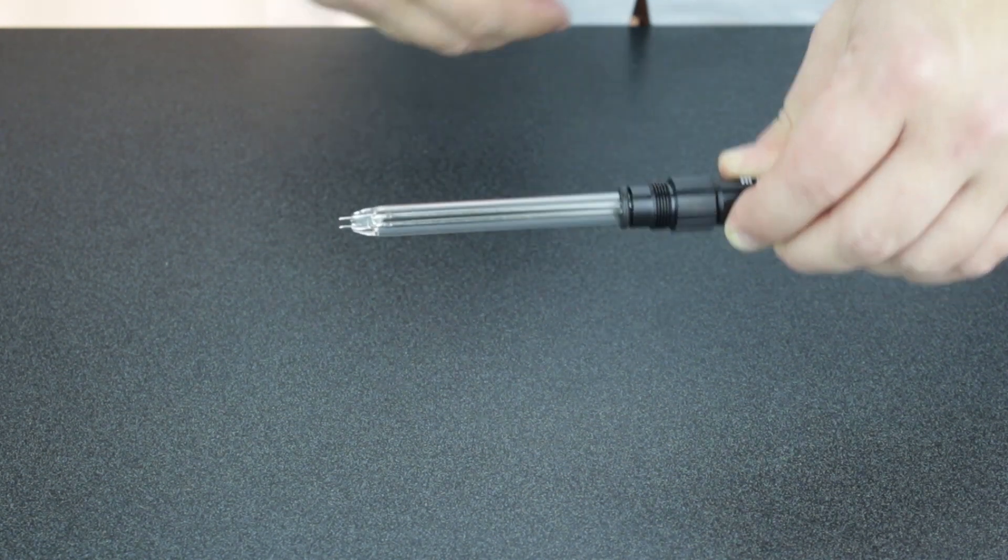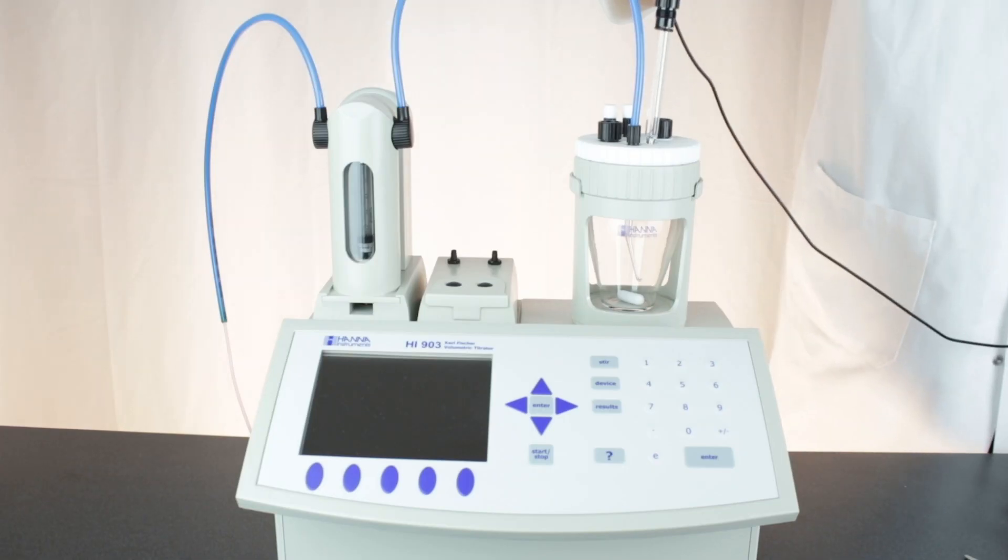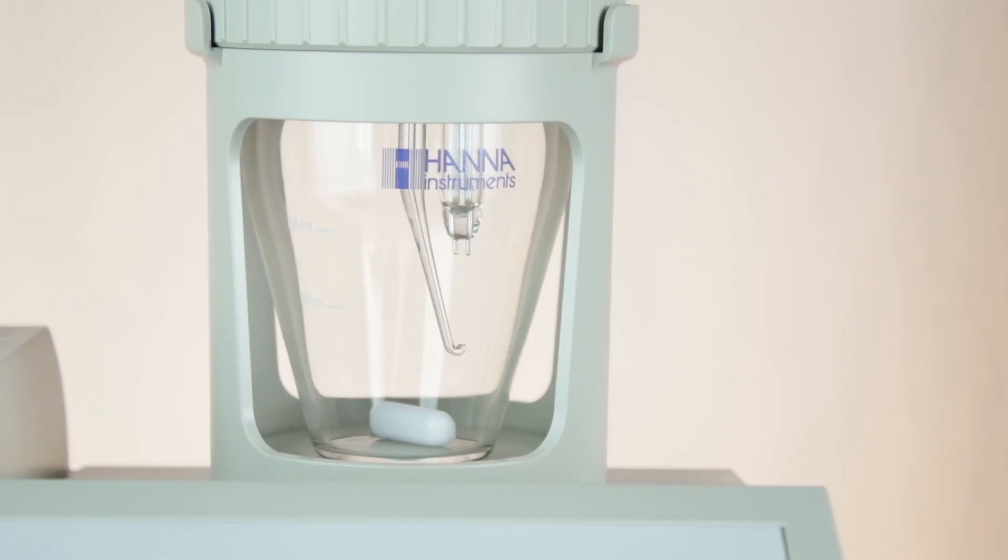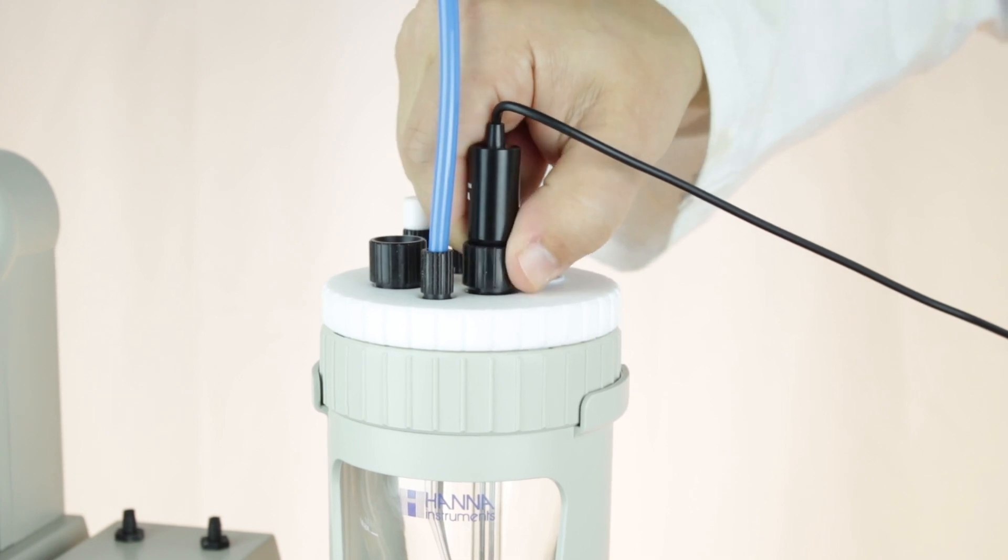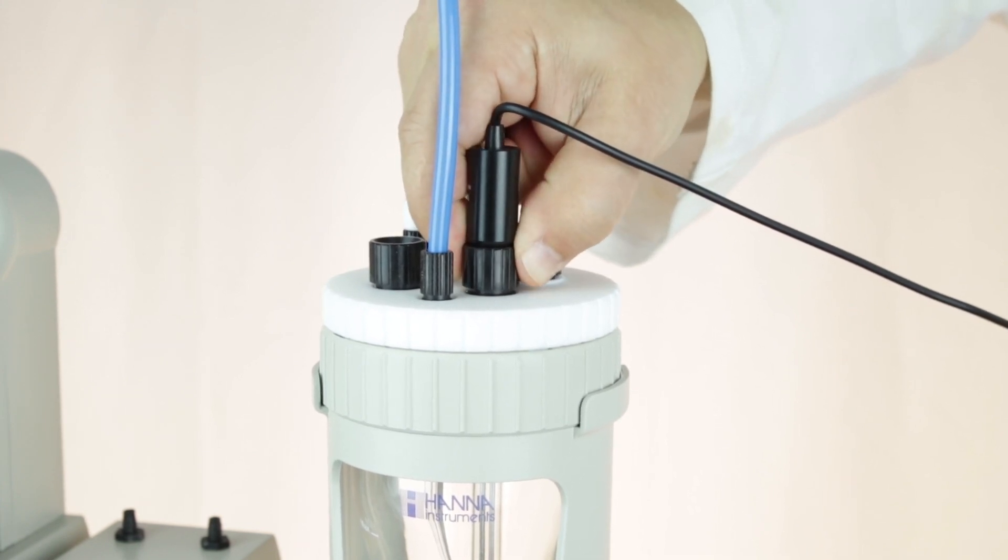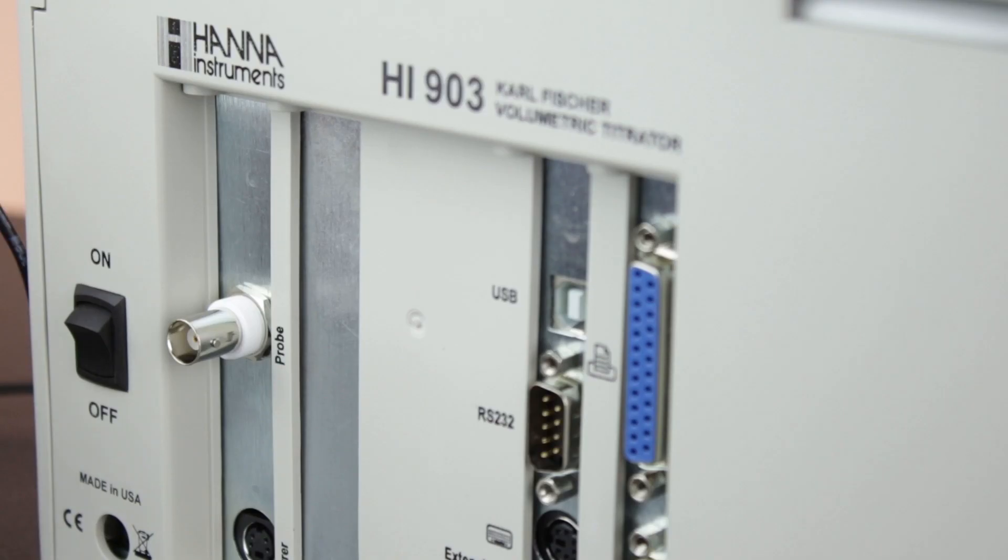Push the electrode down into the beaker and re-tighten the fitting. Be sure that the electrode is pushed down as far as possible and that the electrode pins are aligned with the center of the beaker. Finally, plug the electrode into the back of the titrator.